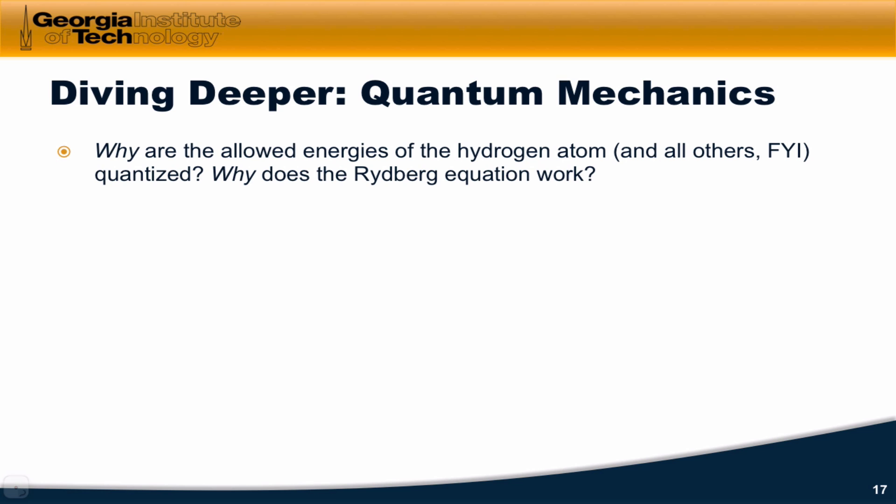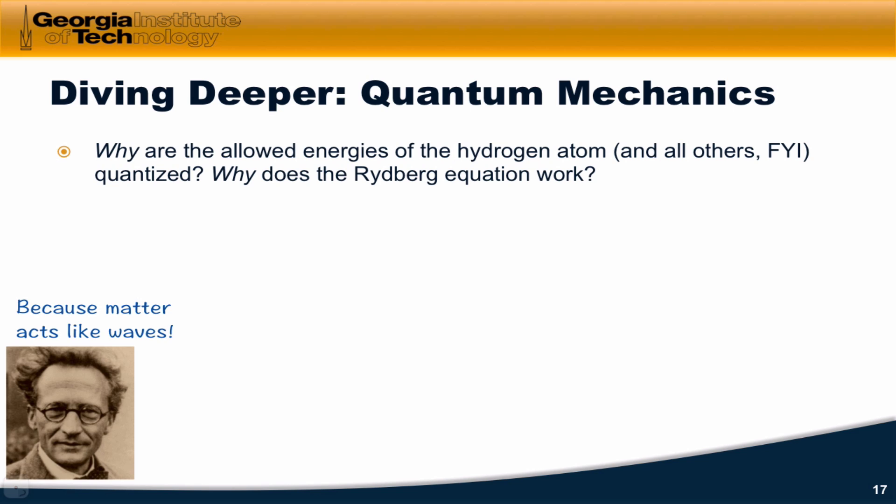The core question here is why? Why are the allowed energies of the hydrogen atom and all others, if we looked at all the other emission spectra of the elements, they too have only discrete wavelengths? Why is this? Why does the Rydberg equation work the way it does?